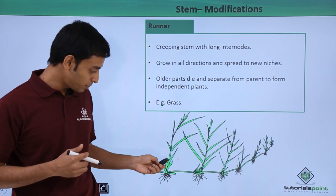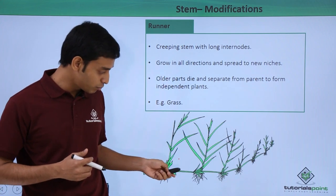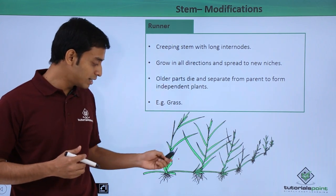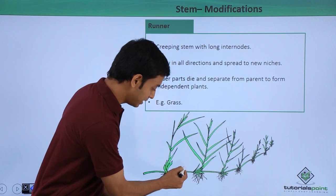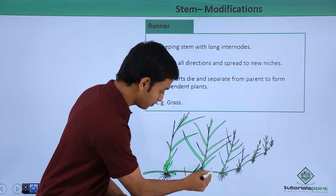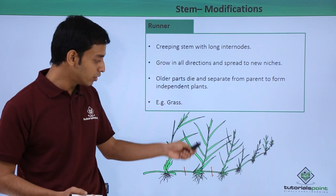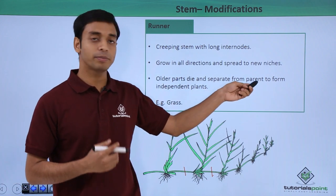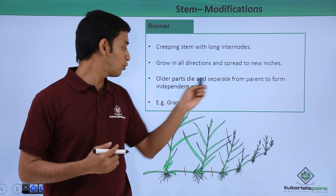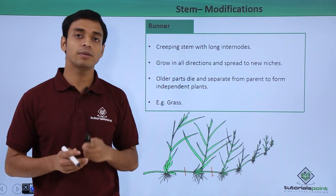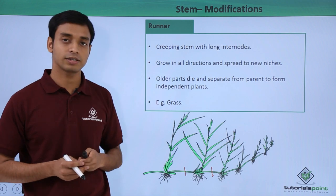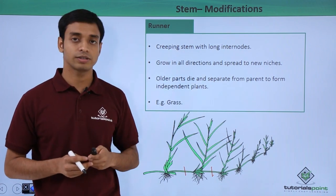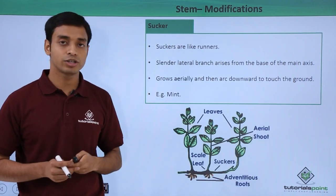As the plant spreads, the older parts die and get detached, forming a new independent plant. A very common example is grass — the normal grass we find around us consists of runners.